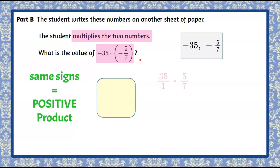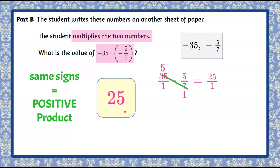Now I'm going to rewrite our work: 35 over 1 multiplied by 5 over 7, ignoring the signs since we've already applied the rule. This is the same calculation as part A, so let's simplify. Divide 35 by 7 to get 5, and 7 by 7 to get 1. Then 5 times 5 is 25, and 1 times 1 is 1. We have the same value — it's just positive. So when we multiplied two negatives, we got positive 25.